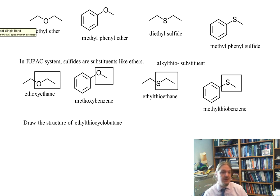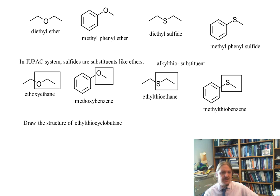Let's go ahead and draw the structure of ethylthiocyclobutane. So the first thing we need is cyclobutane. So let's draw cyclobutane. And then we have this ethylthio substituent. And so ethylthio is connected by the sulfur. This is a sulfide. And then we have an ethyl group attached to that sulfur atom.